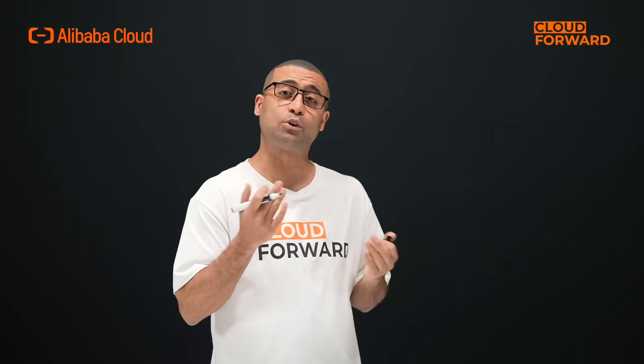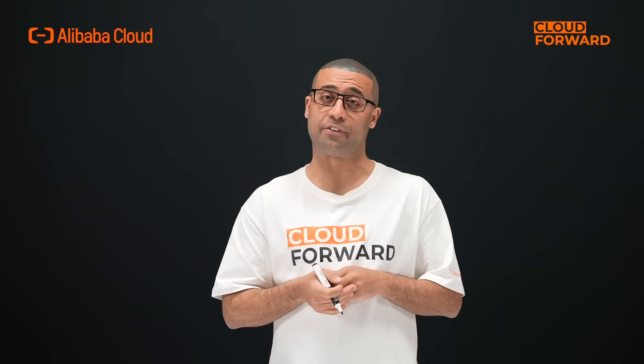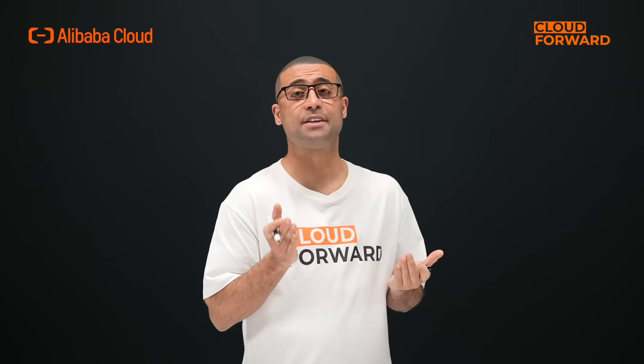For example, how to dynamically return results based on user requests for a product page on Taobao. Common solutions are web monolithic applications and microservice applications. Regardless of which architecture is chosen, serverless helps us focus on our business. Serverless microservice architecture introduces API gateways, function compute, or serverless app engine to implement the computing, offloading a lot of work to cloud services and allowing users to focus on implementing business logic.